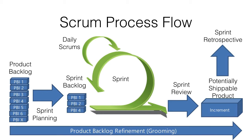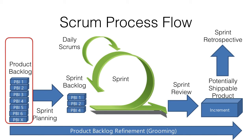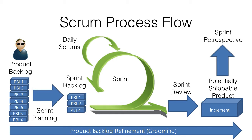The process starts when the product owner creates the product backlog — a list of all the features, functions, and requirements that might be needed in the final product. It's a prioritized list; items with the highest business value have high priority, and low value add-on functionality has low priority. The Scrum master helps the product owner here by offering unbiased comments and representing the development team on the prioritization of the product backlog items.